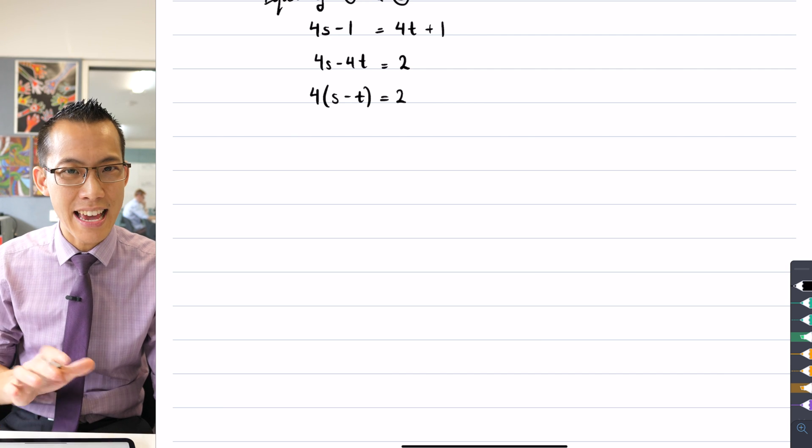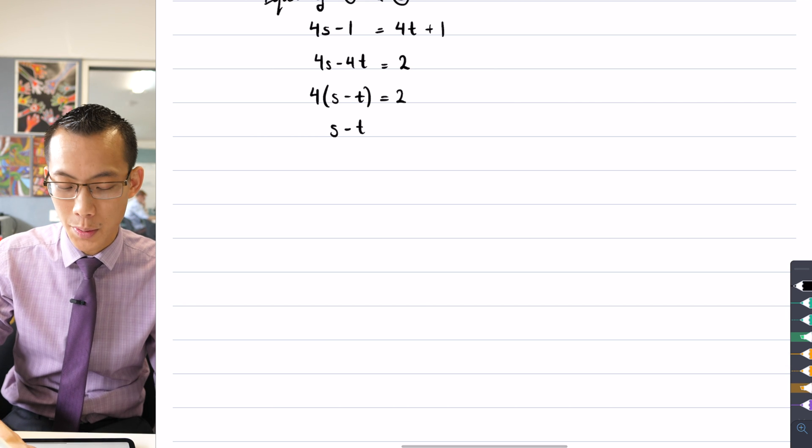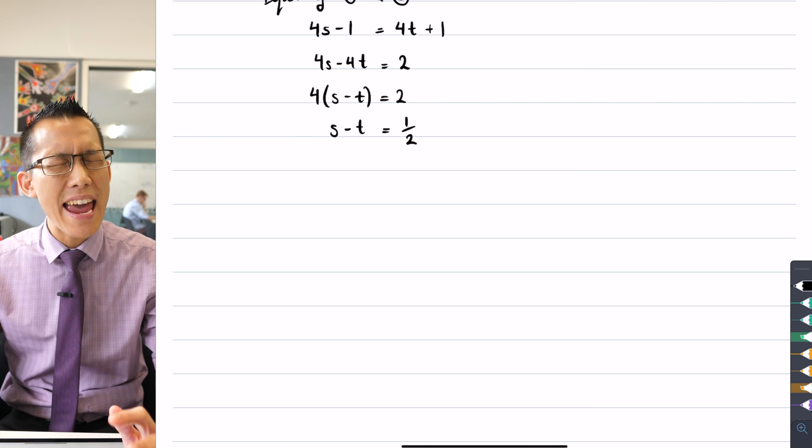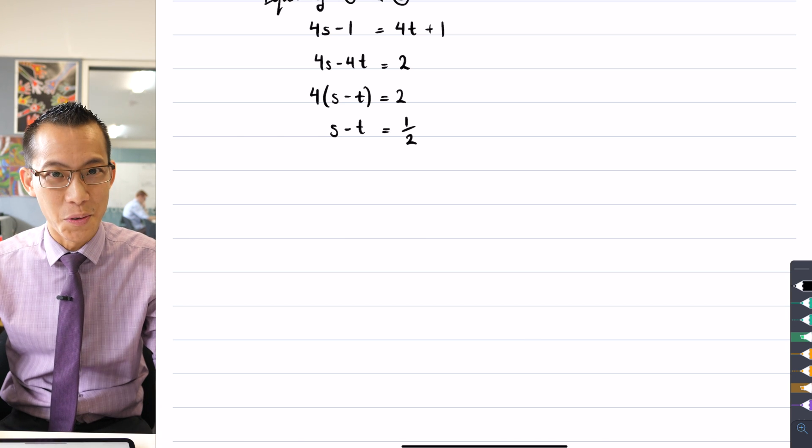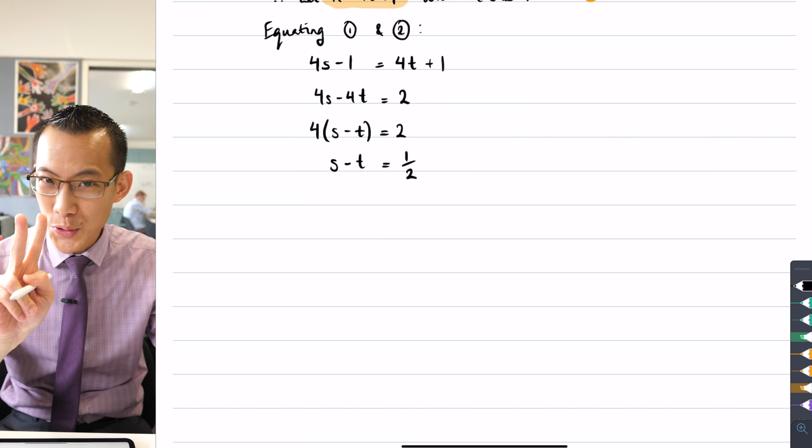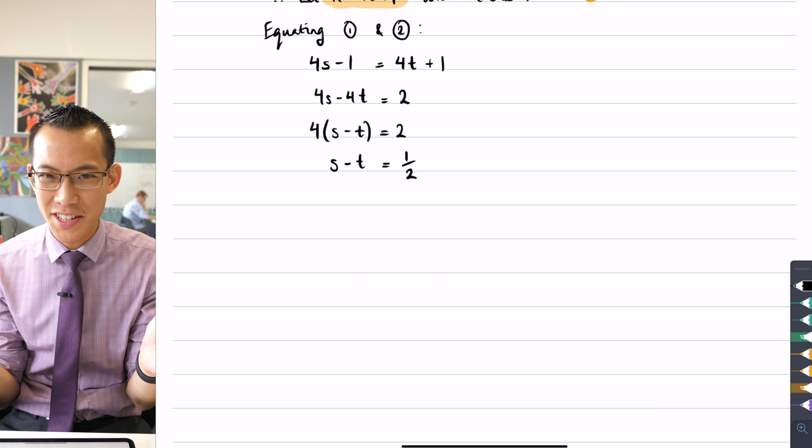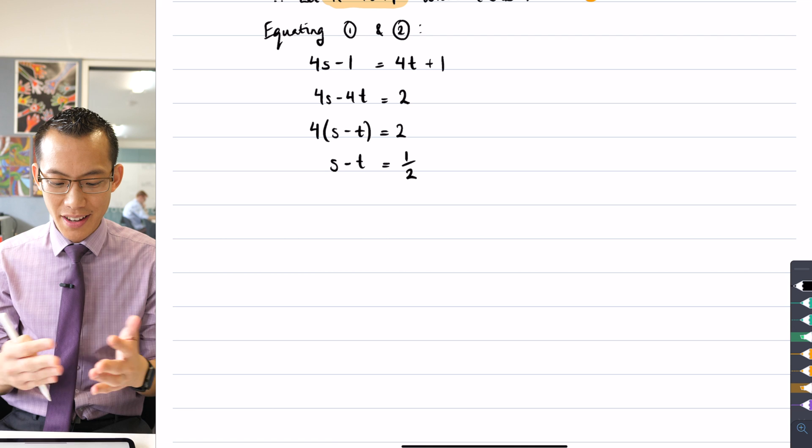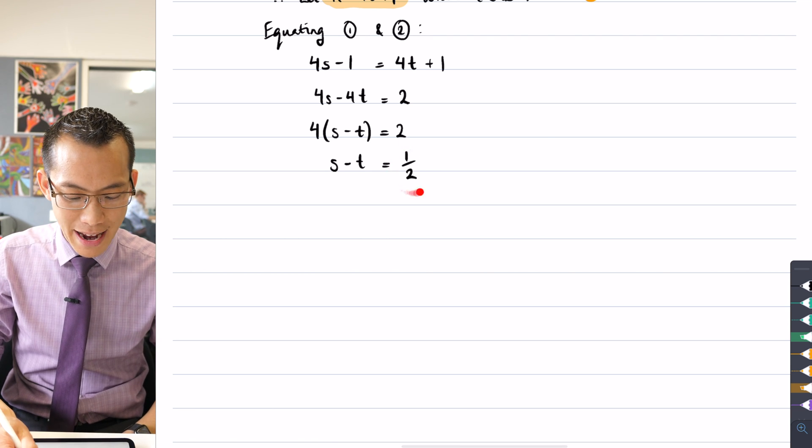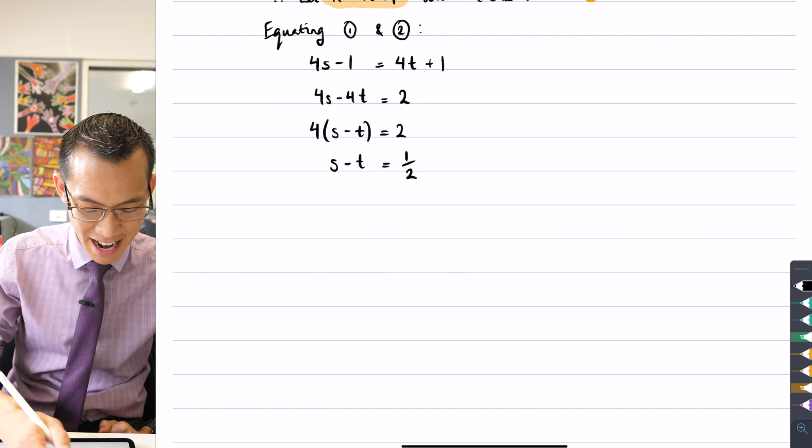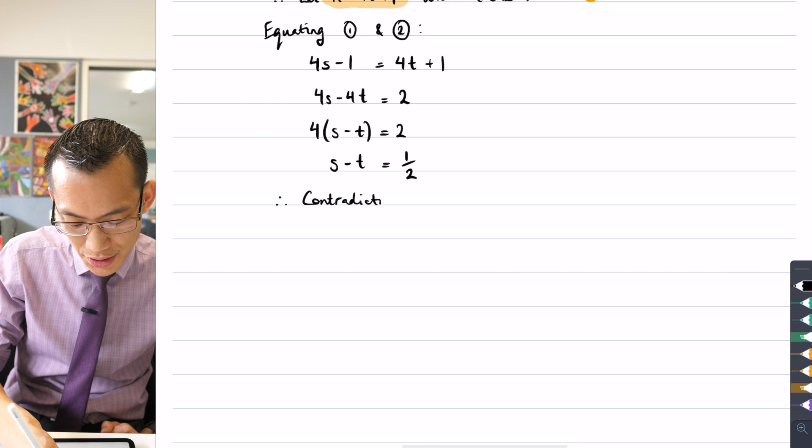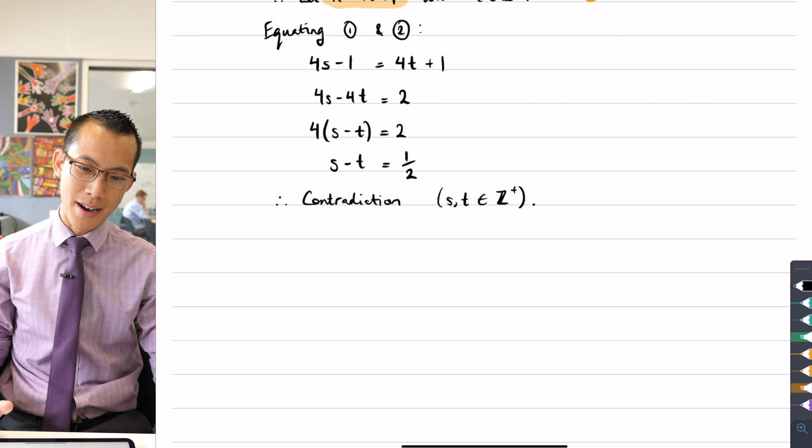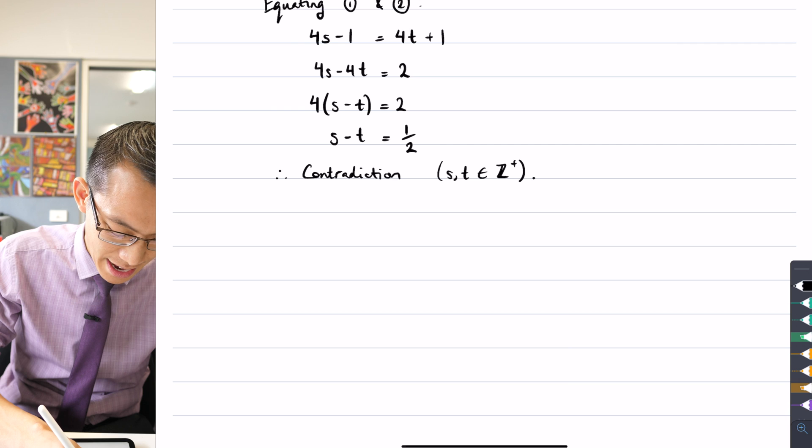So I've got s take away t equal to two divided by four, which is a half. Now s and t can be any positive integer you like. But what I can tell you with great certainty is that if they are positive integers, there are no two positive integers that have a distance of a half between them. The positive integers are one, two, three, four, five, six, seven, and so on. They're either zero distance apart or one apart or two apart. In other words, they are an integer distance apart. They can't possibly be half a unit apart. This is the contradiction that I was searching for.